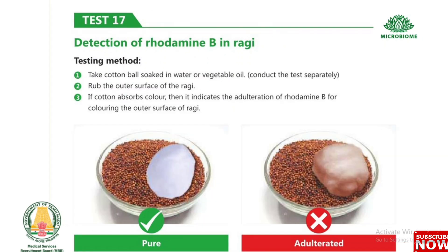Test 17: Detection of rhodamine B in ragi. Take a cotton ball soaked in water or vegetable oil. Rub the outer surface of the ragi. If the cotton absorbs color, it indicates the use of rhodamine B for coloring the outer surface of ragi.